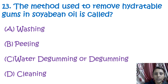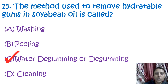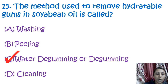The next question is: what method is used to remove hydratable gums in soybean oil? It is called degumming. Degumming is the process of removal of the outer gum coverage from these seeds/oil.